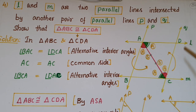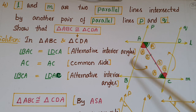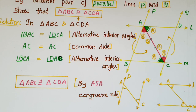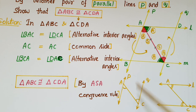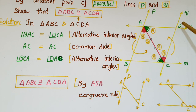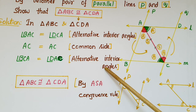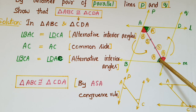This is the fourth problem. L and M are two parallel lines intersected by another pair of parallel lines P and Q. We have to show that triangle ABC is congruent to triangle CDA. In triangle ABC and triangle CDA: angle BAC is equal to angle DCA because these are alternate interior angles — PQ are parallel lines and AC is a transversal. AC is the common side of these two triangles. And angle BCA is equal to angle DAC because these are alternate interior angles of the parallel lines L and M. So triangle ABC is congruent to triangle CDA by ASA congruence rule.